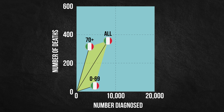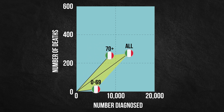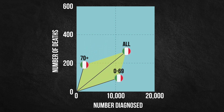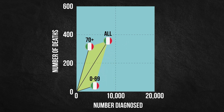Notice that the slope of this vector can change when the slopes of the component vectors change, or when the magnitudes of the component vectors change. In other words, the total case fatality rate depends not only on each subgroup's case fatality rate, but also on each subgroup's size.